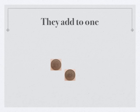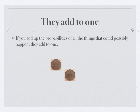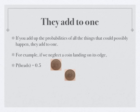Next thing about probabilities: they add up to one — mostly. Let's assume they add up to one here; we'll cover later on when they don't. So you add up the probabilities of all the things that could possibly happen, and they add to one. For example, we're going to neglect a coin landing on its edge — just the straightforward things, no tricks. Probability of heads is 0.5, probability of tails is also 0.5. Probability of heads plus probability of tails: 0.5 plus 0.5 equals one. They add to one.